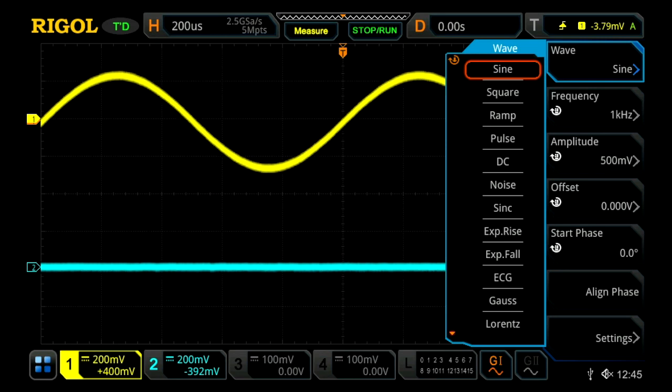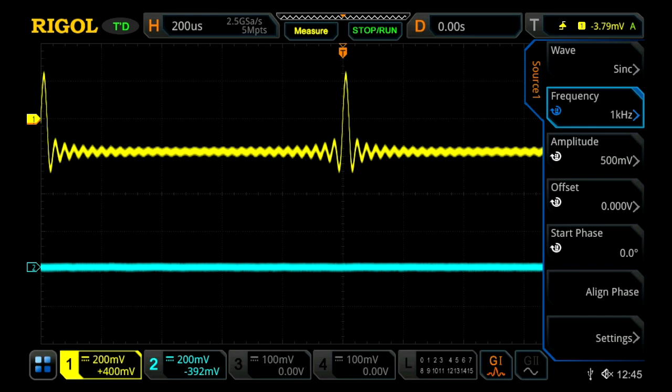Then there are also a handful of built-in arbitrary functions including a sync function and we can load our own arbitrary functions by selecting the arm at the bottom. Let's select our sync function here and we'll now see a sync function on our oscilloscope.